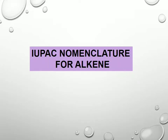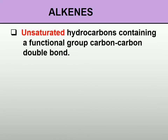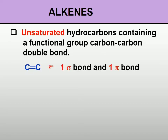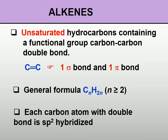Hello, welcome to Madam YY channel. Today we are going to discuss the IUPAC nomenclature for alkene. Alkene is an unsaturated hydrocarbon which contains the carbon-carbon double bond as a functional group. The carbon-carbon double bond is made of one sigma bond and one pi bond. The general formula is CnH2n and the minimum number of carbon must be 2 and above. Each carbon atom with a double bond is sp2 hybridized.